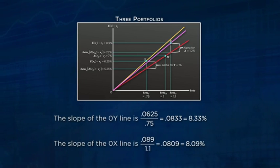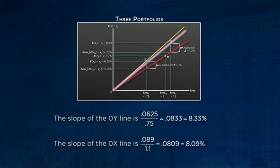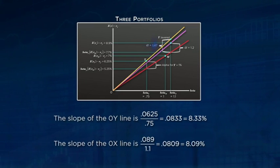If Ichabod is only going to pick one of these two managed portfolios and not lever up, then he should pick X, not Y — he'll get an expected excess return of 1.2% rather than 1%. But if Ichabod is going to form a portfolio with one of these managed portfolios and perhaps lever up, he should use Y, not X. He can create for himself an alpha of 1.47% out of Y rather than an alpha of just 1.2% with X.